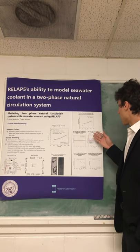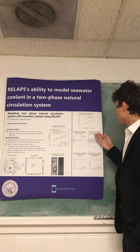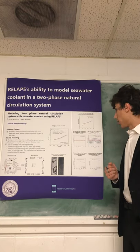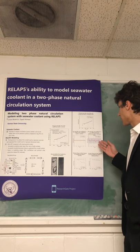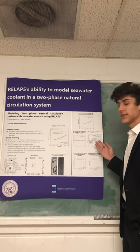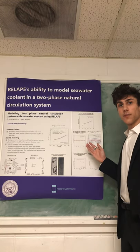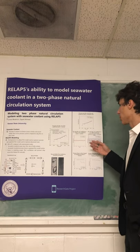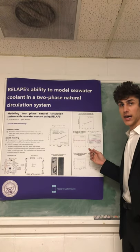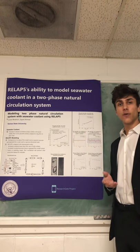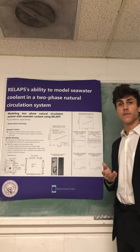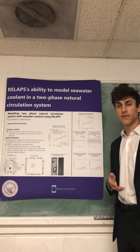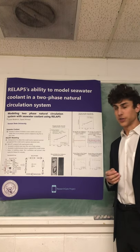When looking at the mass flow rate oscillations of the non-equilibrium model versus the deionized water, we see that there is a large overestimation of the mass flow rate with respect to the actual experimental data. This could have been due to an overestimation of the void fraction inside of RELAP5 at low pressures.